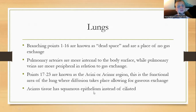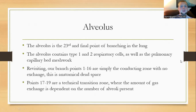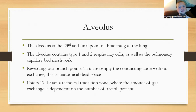The acinar tissue is squamous epithelium — a flat epithelial cell lining allowing easy diffusion across the membrane. At the 23rd branching point, we reach the alveoli, the site where gas is exchanged. Starting from the trachea, branching points 1 through 16 are conducting zones with anatomical dead space. Points 17 through 19 are the respiratory bronchioles — the transition zone where gas exchange is dependent on the number of alveoli present.